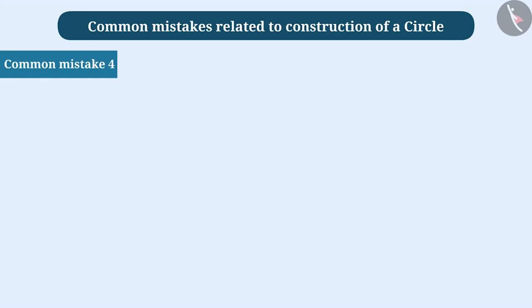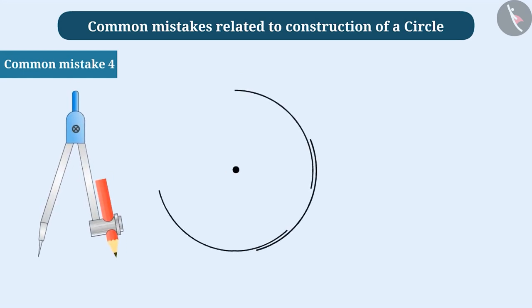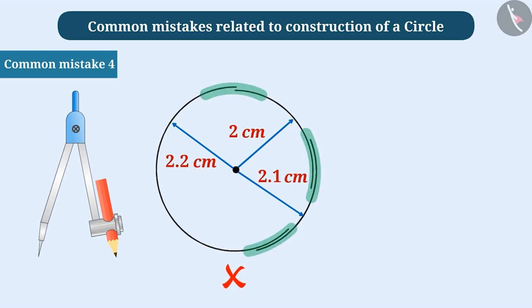Common mistake 4. Some students fail to draw a circle by rotating the compass just once. It becomes necessary for them to rotate the compass repeatedly to draw a circle. In such a situation, the chances of change in measurement taken in the compass increases and as a result, the circle is drawn incorrectly. With practice, one can avoid such mistakes.